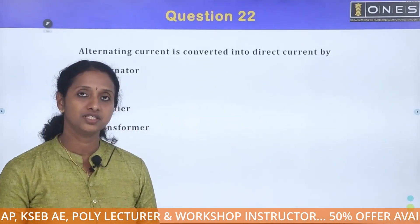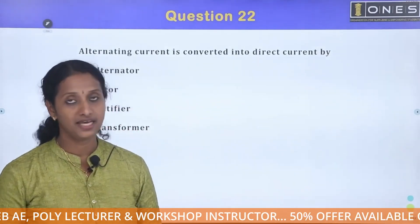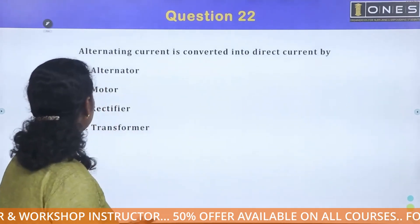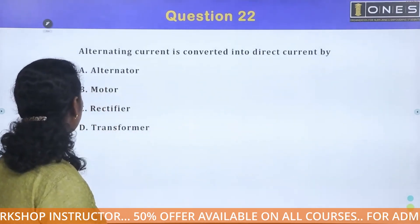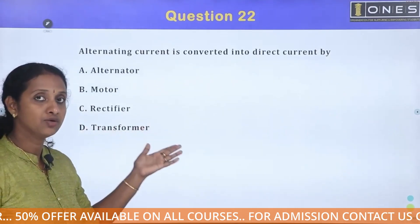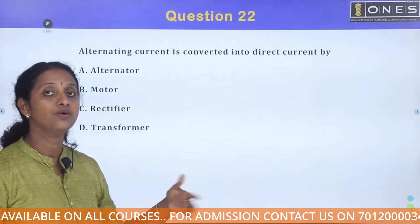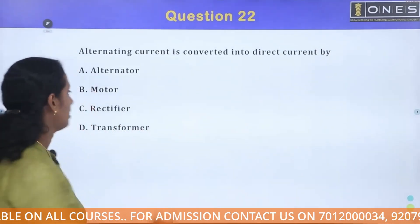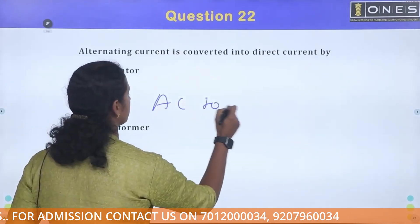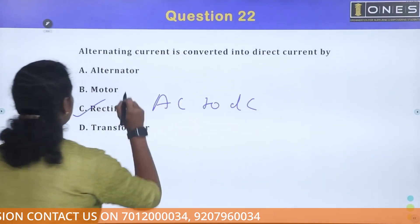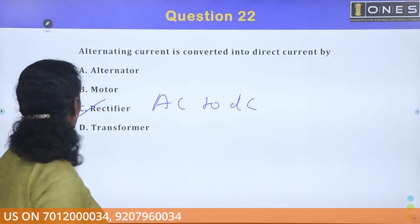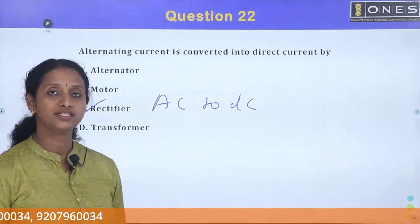A motor converts electrical energy into mechanical energy. Rectifiers convert AC to DC. The correct answer is option C.